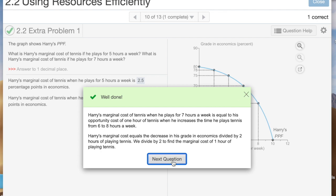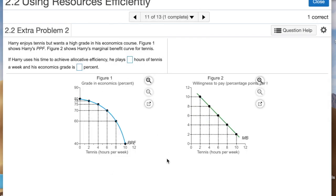Yes, this is correct. When he plays tennis for seven hours a week, his opportunity cost is going to be five percentage points. So we're going to continue on with this question. Harry enjoys tennis but he wants to get a high grade in his econ course. The PPF is shown here. This is what's possible for Harry to do—the grades that it's possible for him to make depending on the time that he spends playing tennis. The PPF illustrates the idea of marginal cost. As we move down Harry's PPF, the marginal cost is increasing, and we can calculate those values.